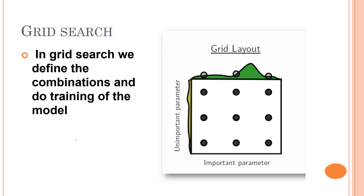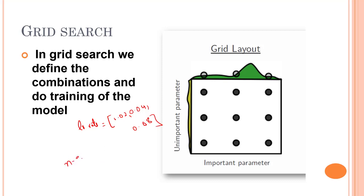For example, we might give the learning rate (lr) values of 0.02, 0.04, and 0.08 — three values. Then for n_estimators we might give values of 100, 200, and 95. Grid search will create a model for each and every combination, compare the results, and then we get the best learning rate out of these three and the best n_estimators out of these three. That's what grid search does — using all combinations, we get the best hyperparameter values.